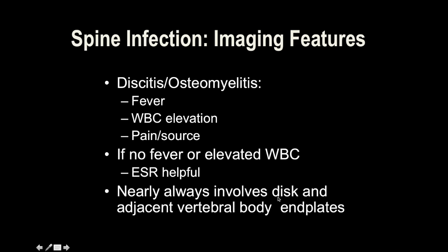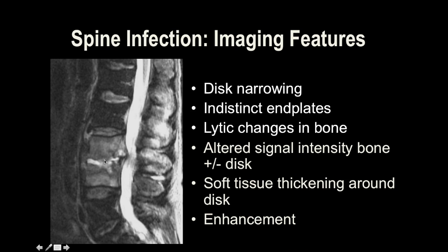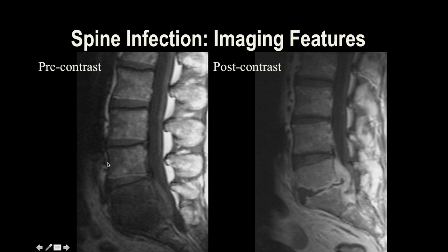Infection nearly always involves the disc and the adjacent vertebral body end plates — here both end plates are involved. On the precontrast T1 there is no visible fluid in the spinal canal since T1 is not fluid-sensitive; you see a dark appearance with a convexity or bulge. After contrast, you notice enhancement consistent with a small epidural abscess and phlegmon. Once contrast is given, you can see enhancement and better define osteomyelitis involvement.